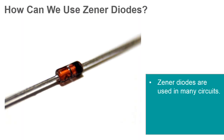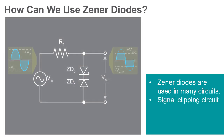Zener diodes are frequently used in a few different applications. First, a waveform clipper. Two Zener diodes connected at the cathodes will clip both halves of an input signal. These types of circuits can be used to reshape signals, and they can also prevent voltage spikes.